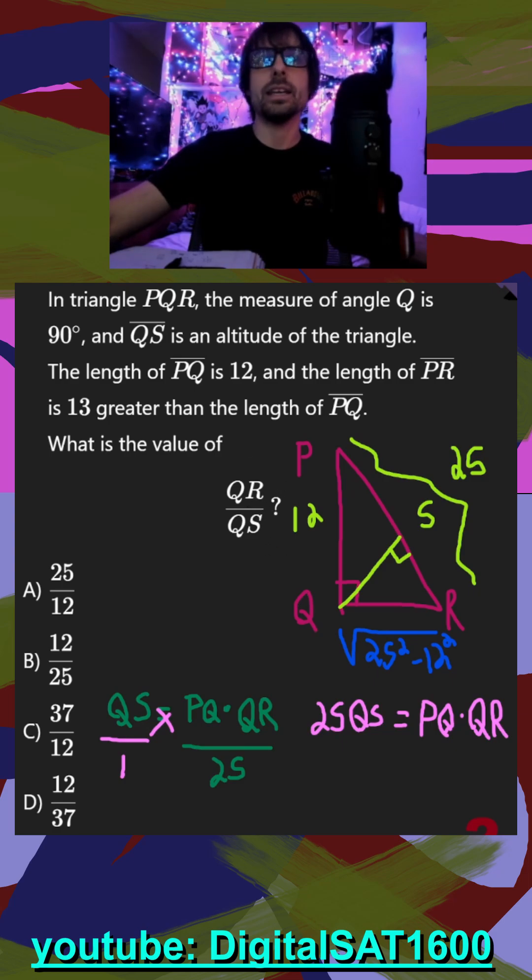So our goal is QR is already on top. If we can get QS on the bottom, well, it's going to save us a little bit of math in the future.